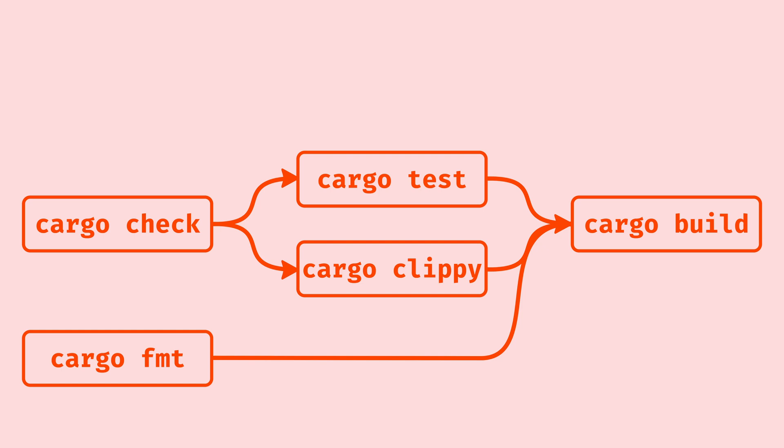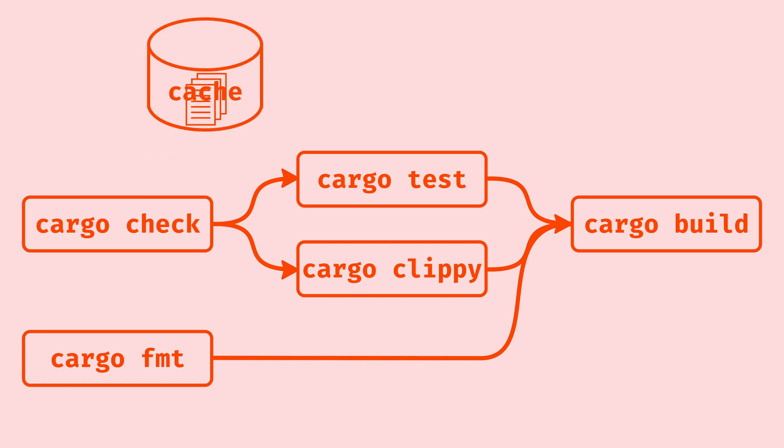Depending on your CI suite, it might be that each of these tasks runs in isolation — for example, it might run each step in a Docker container. But Cargo Check is going to do a lot of hard work that some of the other steps can use. This is where it's worth learning your CI suite's caching process so that you can cache the output of the Cargo Check step.